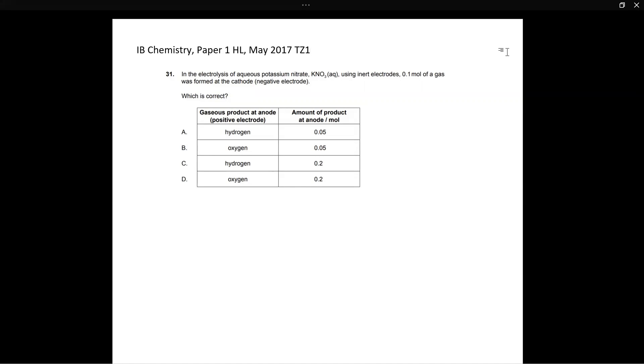Now in this, they have asked us about the electrolysis of aqueous potassium nitrate KNO3 using inert electrodes. 0.1 mole of a gas was formed at the cathode, which is the negative electrode. And then they have given us these four options where they have told us about the gaseous product at the anode and the amount of product produced at the anode in moles.